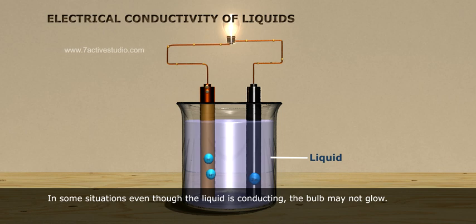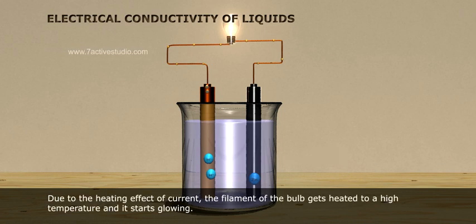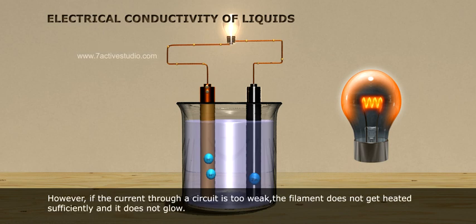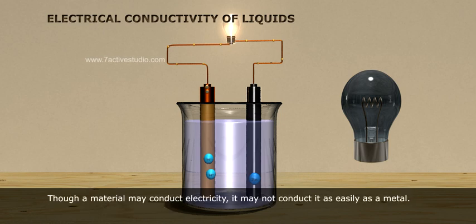Due to the heating effect of current, the filament of the bulb gets heated to a high temperature and it starts glowing. However, if the current through a circuit is too weak, the filament does not get heated sufficiently and it does not glow. Though a material may conduct electricity, it may not conduct it as easily as a metal.